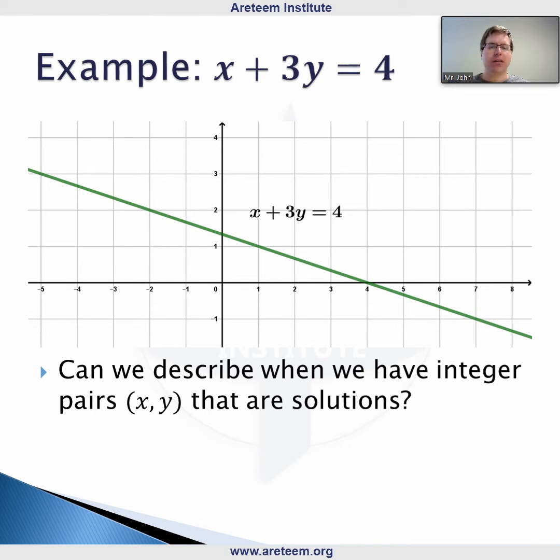That's not the case for integer solutions. For example, if x equals 0, y equals 4 thirds, so we don't have an integer solution that way. But we want to describe the integer solutions. It's easy to see that when x is 4, y equals 0.